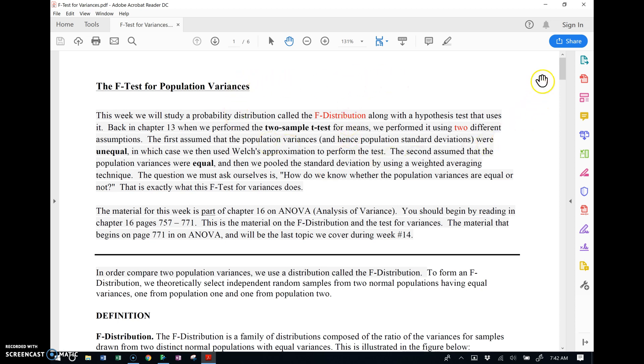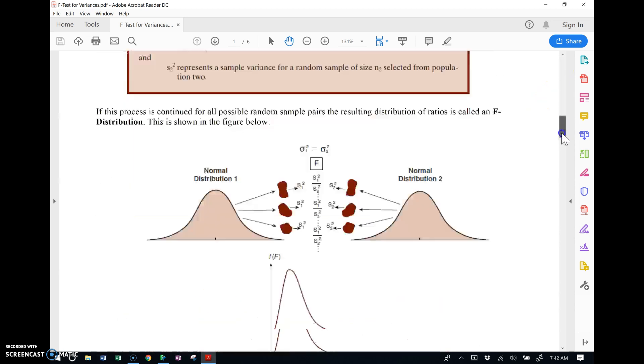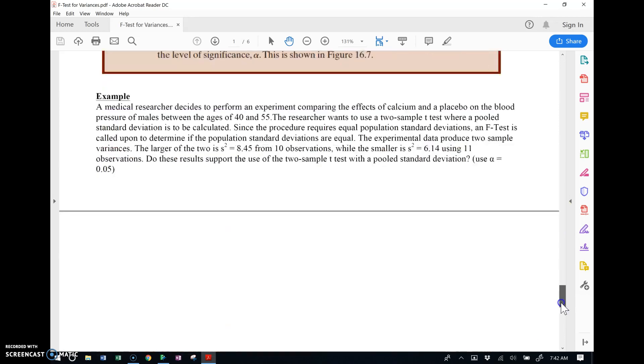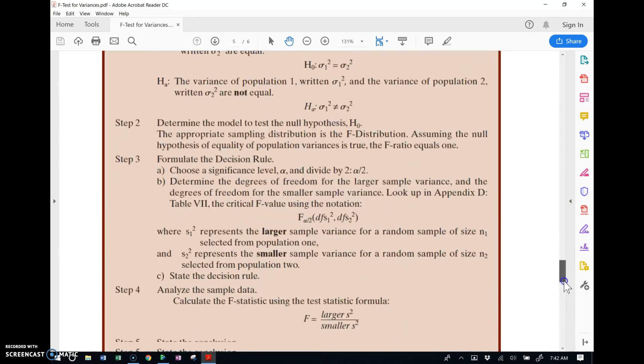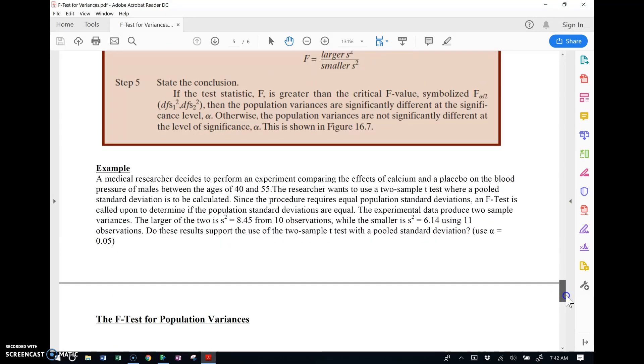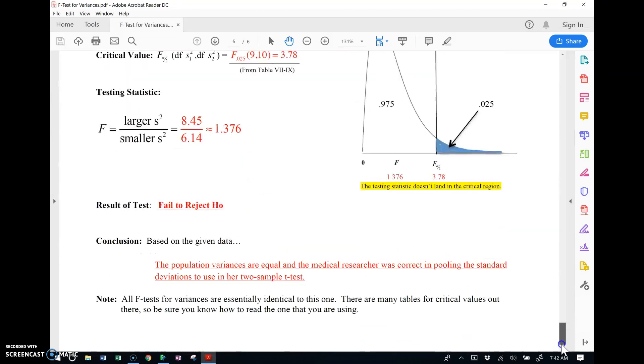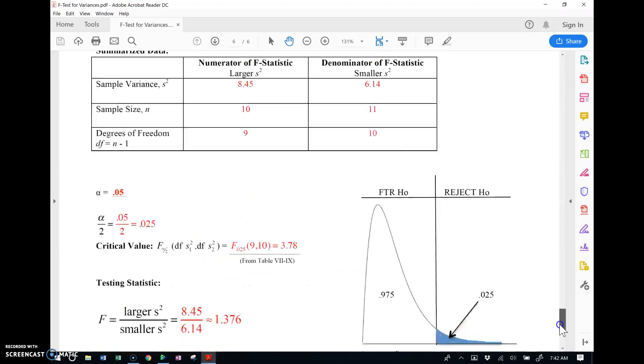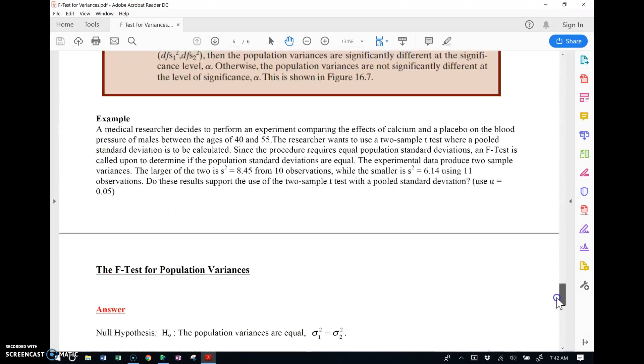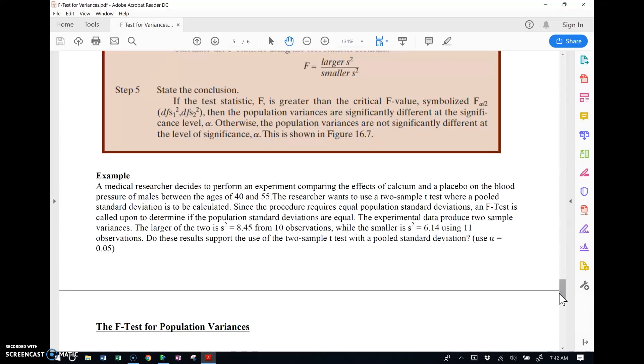So in the notes for this section if I go all the way to the end of the notes there's an example and I've worked the example. There's the example with the medical researcher and I worked the example on the template and this test was a fail to reject scenario. Let's take a look here and I'll point out a few things about the template and then I'll show you how to work this in JUMP which is extremely easy.